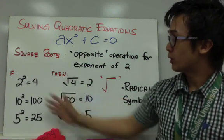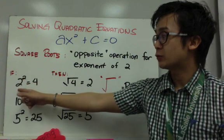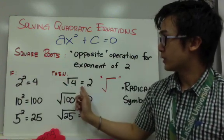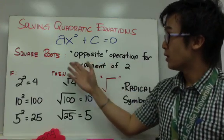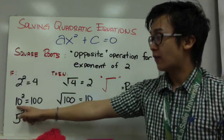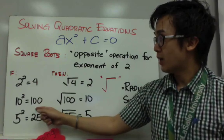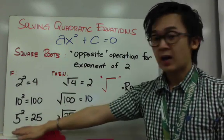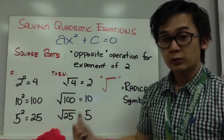To give you a short review of square roots: we know that if 2 squared is equal to 4, then the square root of 4 is equal to 2, which is true to the definition of square root — the opposite operation of an exponent of 2. If 10 squared equals 100, then the square root of 100 equals 10. And if 5 squared equals 25, then the square root of 25 is equal to 5.